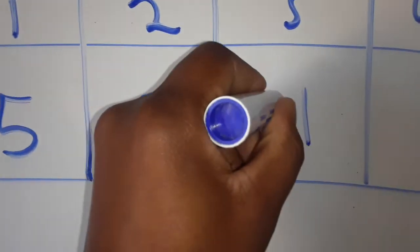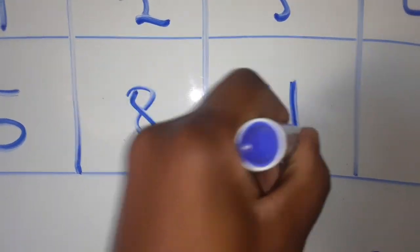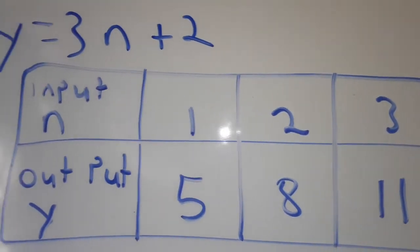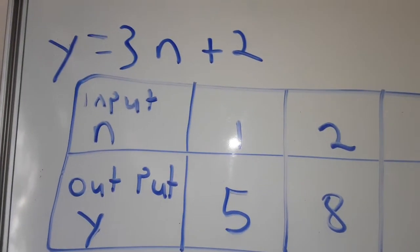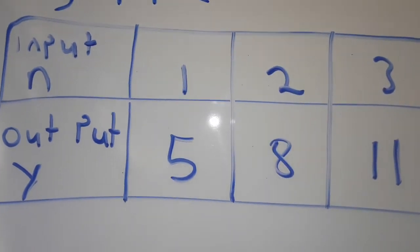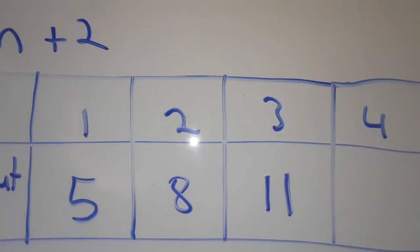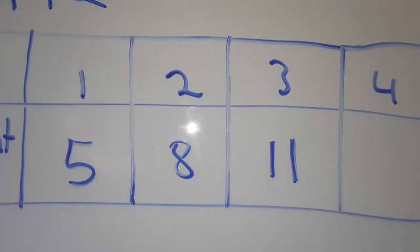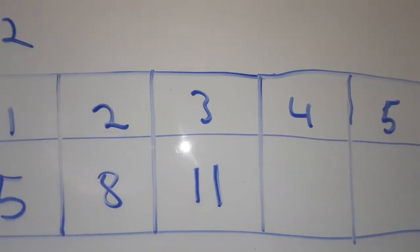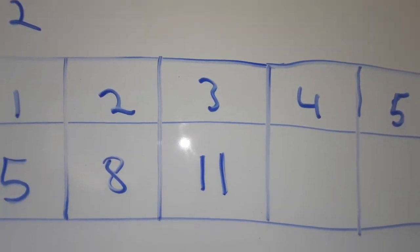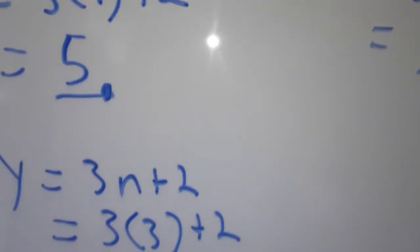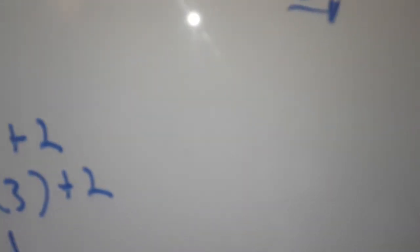So this is how you work out the input-output table. When n is equal to 1, y is 5. When n is equal to 2, y is 8. When n is equal to 3, y is 11.